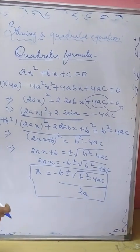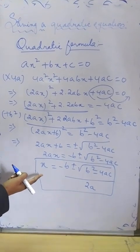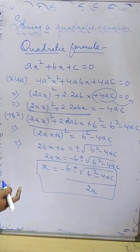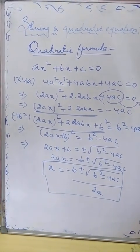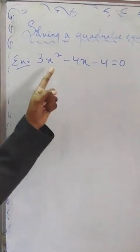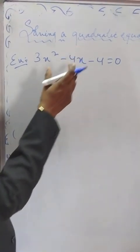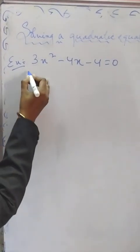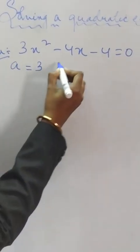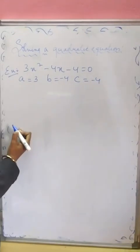Now let me explain how by using this quadratic formula we can find the values of any given quadratic equation. Here is an example where we have the quadratic equation 3x² - 4x - 4 = 0. The coefficient of x² gives us a = 3, and we get b = -4 and c = -4.